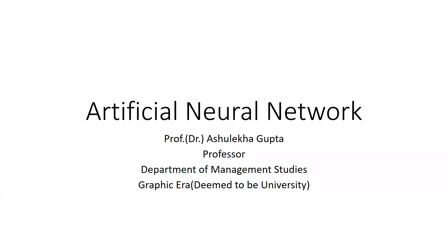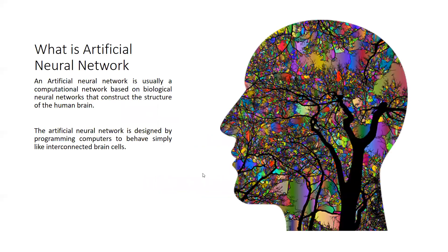Let's begin with artificial neural network. An artificial neural network is a very important part in our analysis in Python. An artificial neural network is a computational network based on biological neural networks that construct the structure of the human brain. Basically, we are artificially creating a human brain, and the neurons work in the same way in a machine.